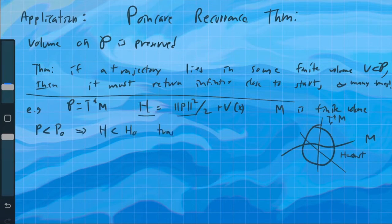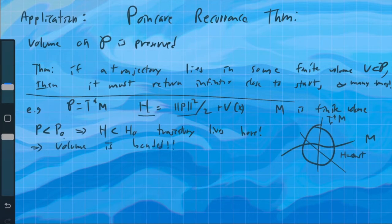So your trajectory lives here. Your trajectory will never have a momentum larger than a certain amount, which means that the total volume of your space is going to be bounded. So the volume is bounded. In other words, for a kinetic plus potential Hamiltonian on a finite configuration space, you will always have this recurrence property.